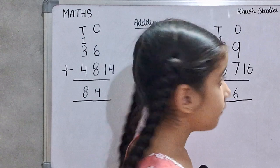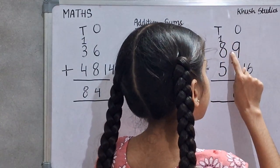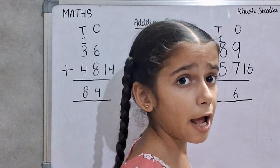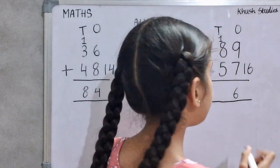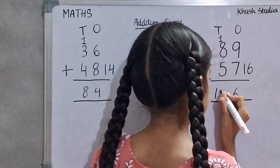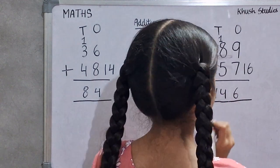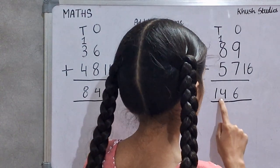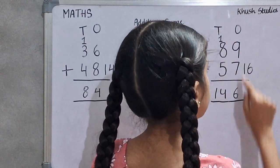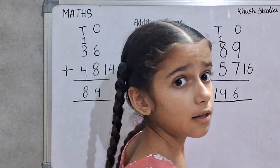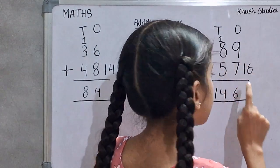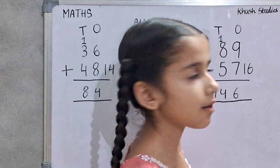We will add tens. 1 plus 8 is 9, 9 plus 5 is 14. So, 1 hundred 4 tens and 6 ones. 89 plus 57 is 146.